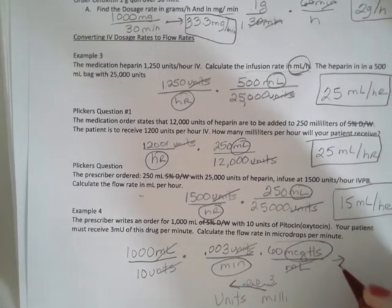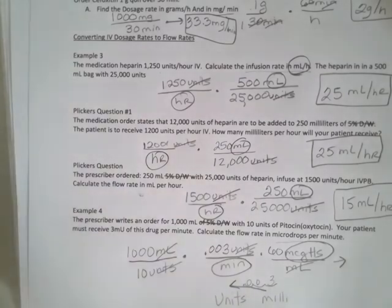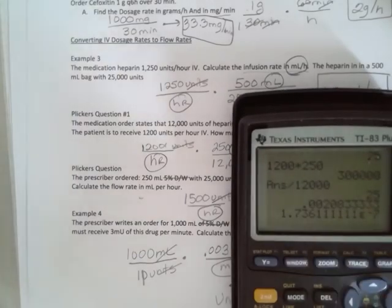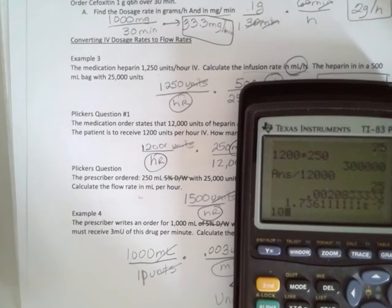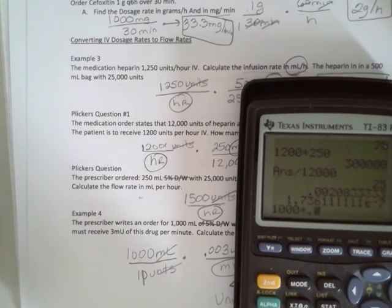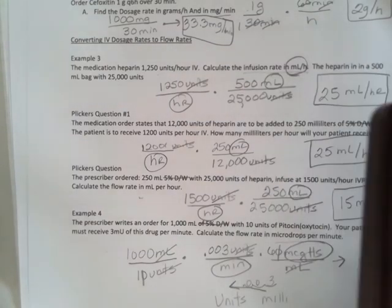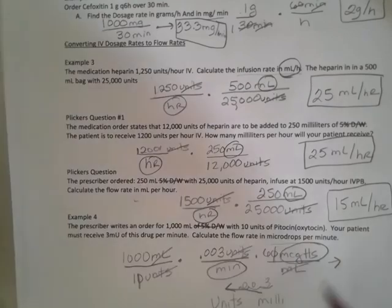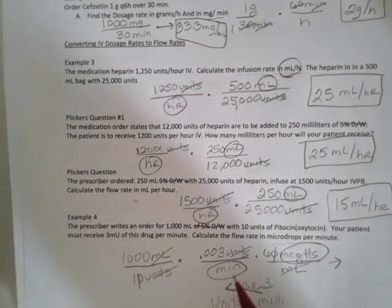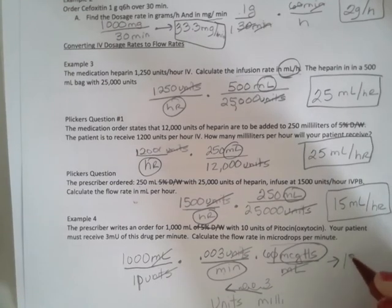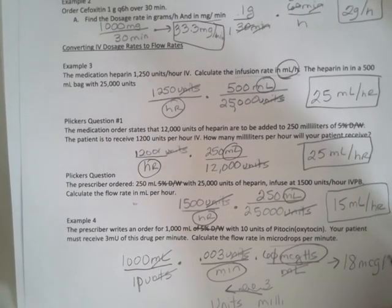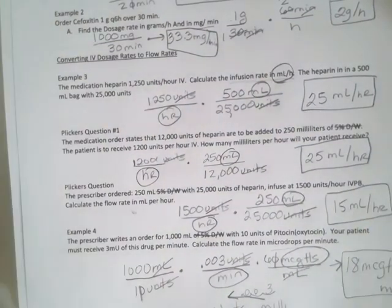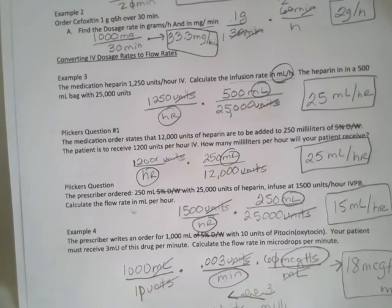So now when I do my multiplication, I'm going to cross out this 0 with this 0. So now I'm going to take my 1,000 times .003 times 60. And I get 18. And I didn't have to divide anything in the bottom because I have 1, 1, and 1. So this is 18 micro drops per minute. And I will continue the next page on part 2.